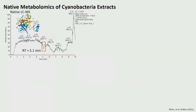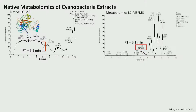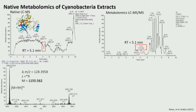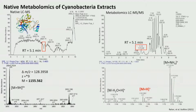When we look at our native metabolomics run, we see something very similar to before: there's a negative peak at around five minutes. That corresponds to a peak here in our metabolomics run on the right at five minutes as well.